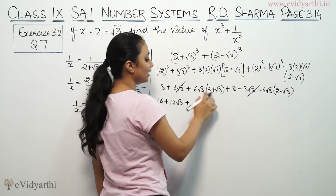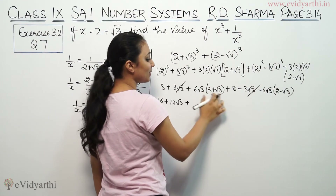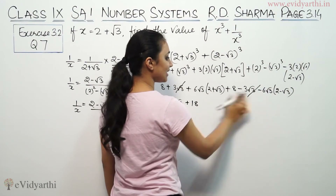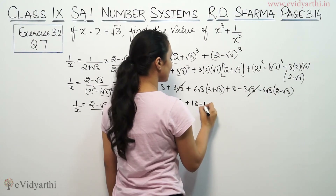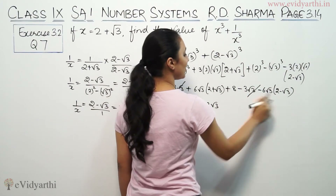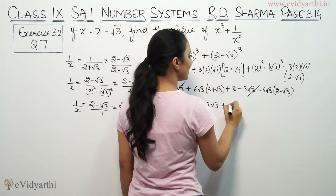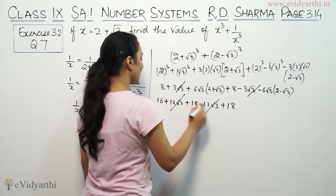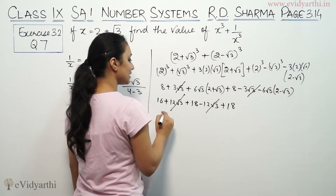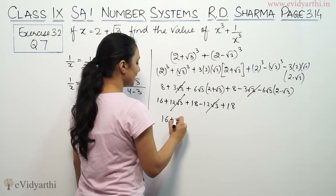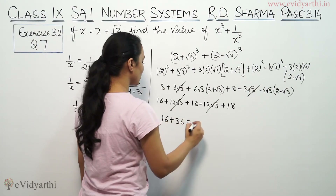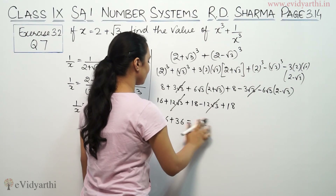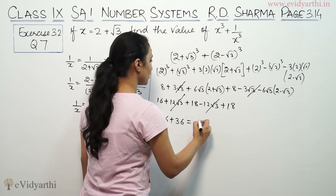For the remaining terms: 6 root 3 into 3 gives 18, and again 18. With the minus-minus becoming plus, those terms give 6. The 12 root 3 terms also cancel out. So the final result is 16 plus 18 plus 18 equals 52. That means x cube plus 1 by x cube equals 52.